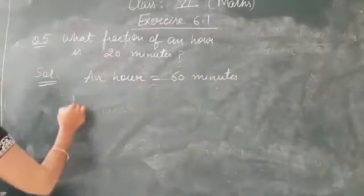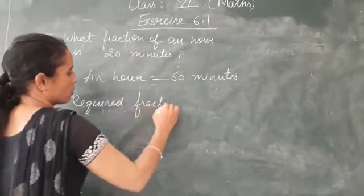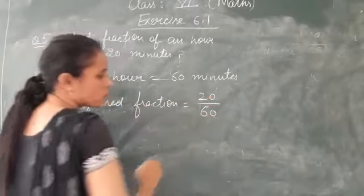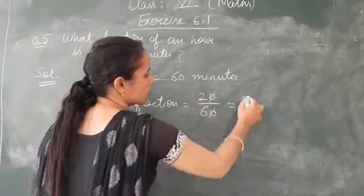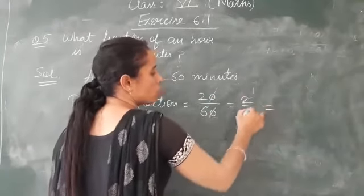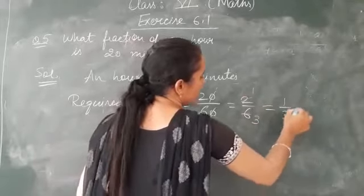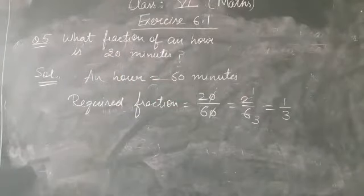So the required fraction will be 20 out of 60. We can cancel these. It remains 2 by 6. Cancel these on 2, so 1 by 3. It means 20 is one third part of an hour.